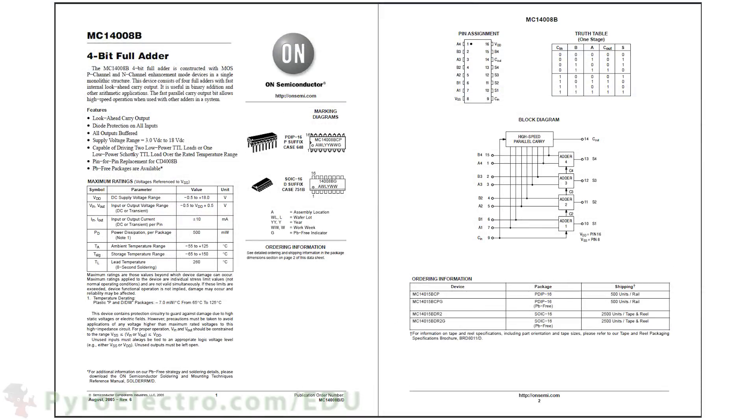First, we'll take a look at what is called a 4 bit adder. This IC can take two 4 bit binary numbers, add them together, and give you the result in binary.